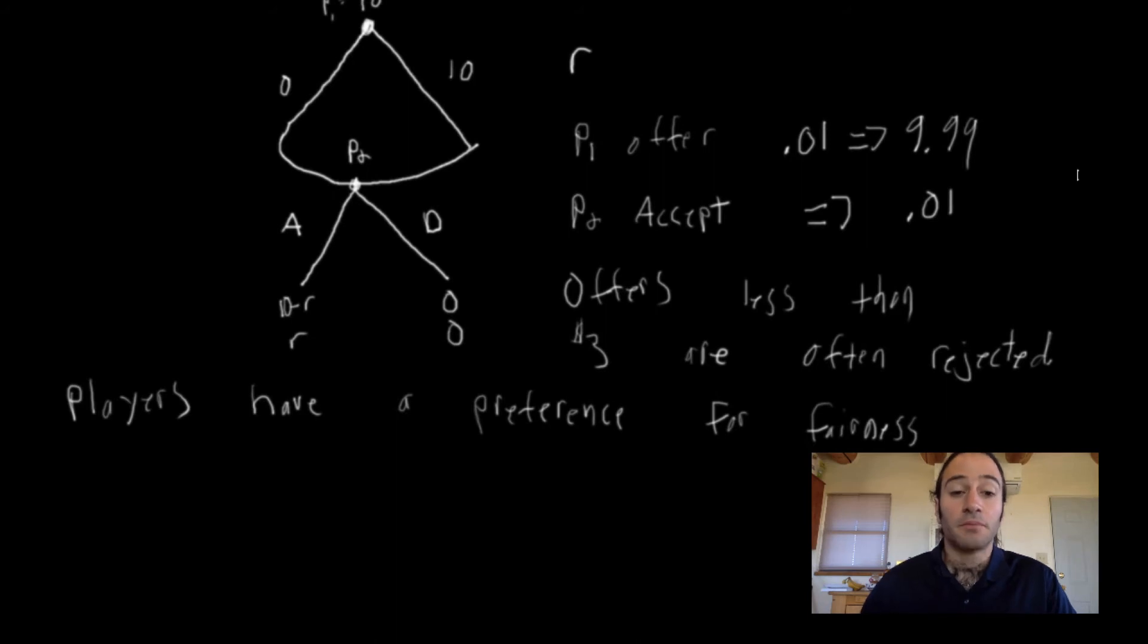That is, Player 2, if he thinks that Player 1 is being unfair, he is willing to forego, say, maybe a penny or a dollar payoff, to kind of stick it to Player 1 and say, you're not being fair to me, so neither of us are going to get anything. What this means is that there are probably some other cognitive processes that are going on in the decision maker's head that are not explicitly modeled in these payoffs.